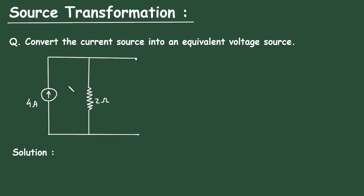Here we can see in this circuit, this is a current source and this is a resistor. We have to convert this current source into an equivalent voltage source.